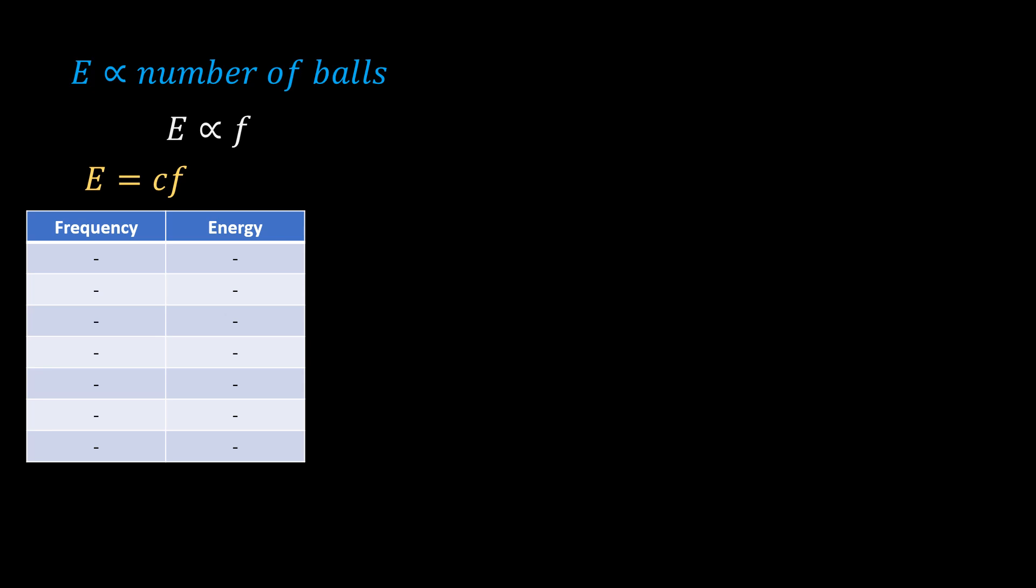The energy recorded by the detector in a given time depends on the total number of balls or waves that struck it. This means that the higher the frequency, the more the number of particles that will strike the detector, hence more energy. This means that energy is directly proportional to frequency. Mathematically, we have this, which transforms into this when we take away the proportionality sign. To get the value of c, you have to do the experiment. Set the vibrator or propeller to different frequencies, and for each frequency, measure the energy reading after, say, 10 seconds. From the data, you can plot a graph of energy against frequency, from which you can calculate the slope.